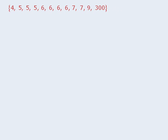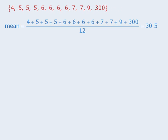Now notice what happens when we find the mean, median, and mode of these 12 numbers. The mean is 30.5, the median is 6, and the mode is 6. So in this case, the mean is quite different from the median and mode. The reason for this is that the 300 here changed the mean calculations significantly.